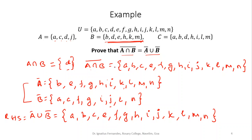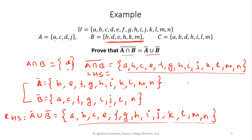Comparing right hand side with left hand side: both are {A, B, C, E, F, G, H, I, J, K, L, M, N} — all elements except D. They are the same. So we have proved that (A intersection B) complement equals A complement union B complement for these sets.